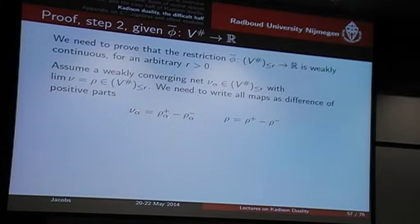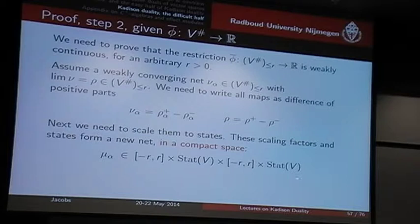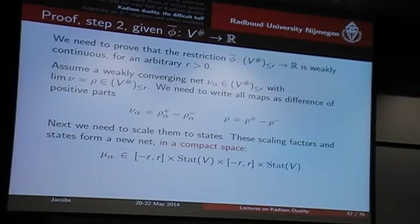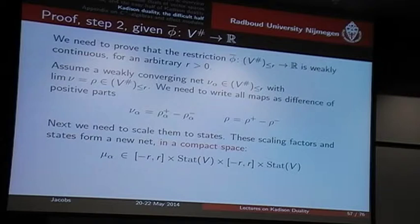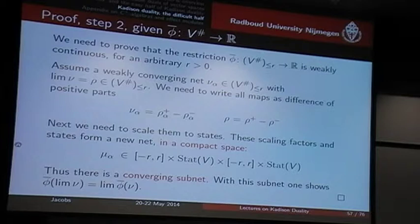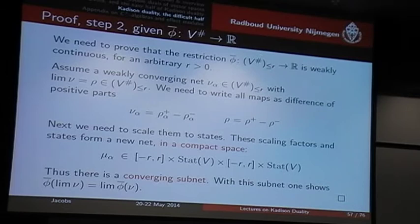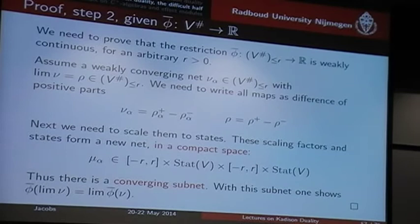So you split mu of our net into a positive and negative part, and also split the limit. You have to rescale. But once you rescale, the factors for your rescaling will end up in a closed domain — because in the beginning we assumed this limit is in here, and the whole net is in here. The important thing is that we can now turn this net into another net which is in a product of compact spaces. At this stage you can then claim that there must be a converging subnet, and using this converging subnet you can actually prove that the limit is preserved. The crucial step is to go from this restriction to compact spaces in which you can take the converging subnet.